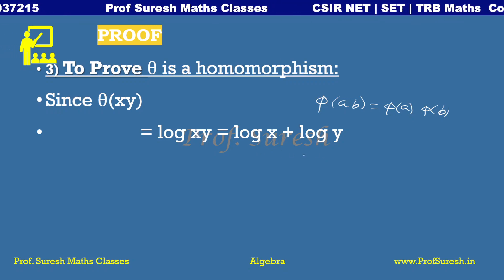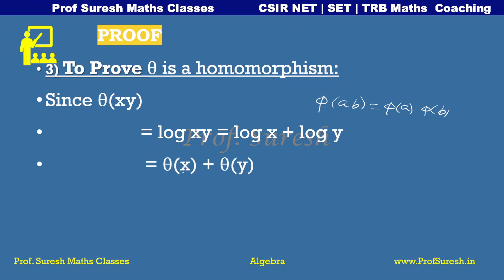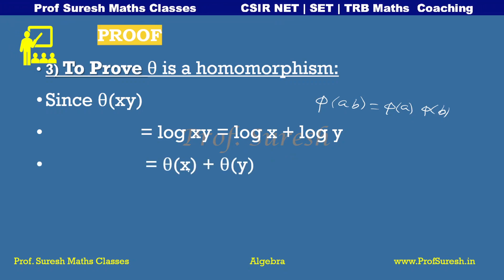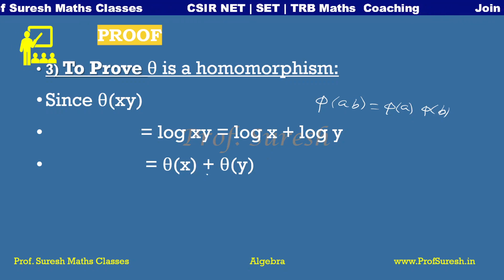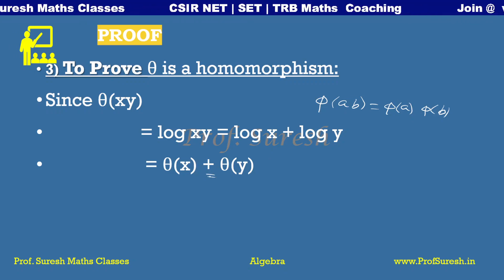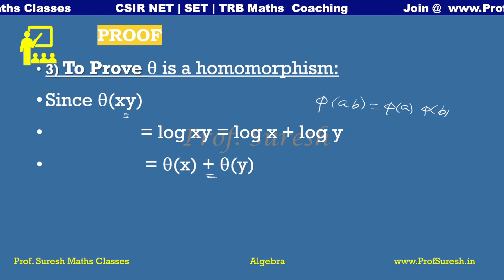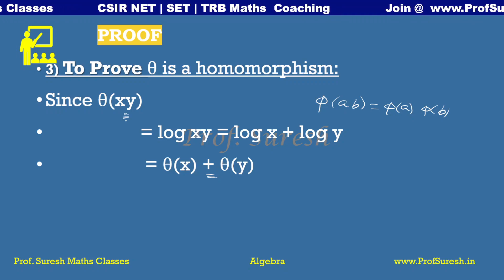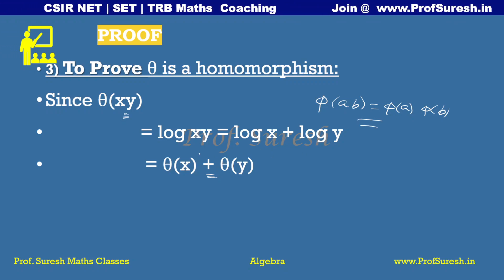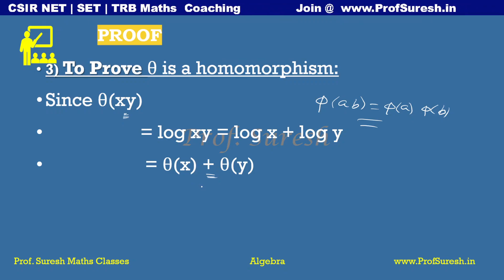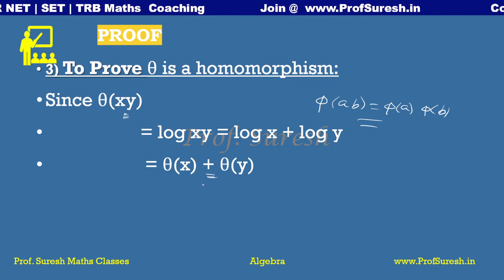Now, theta of xy equals log xy equals log x plus log y, which by definition equals theta of x plus theta of y. Therefore, theta of xy equals theta of x plus theta of y, and so theta is a homomorphism.